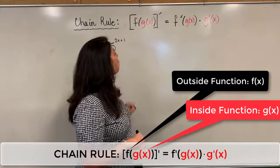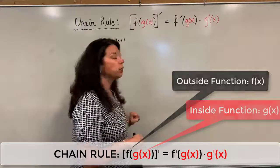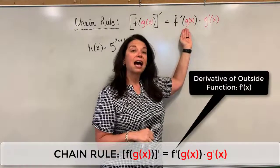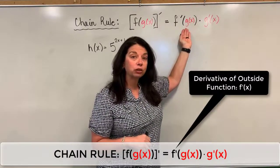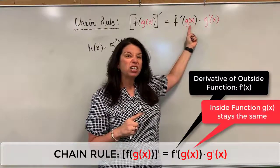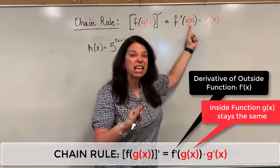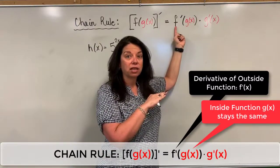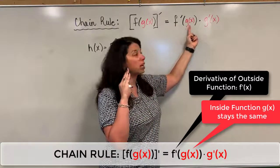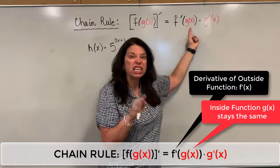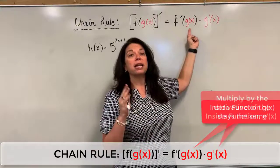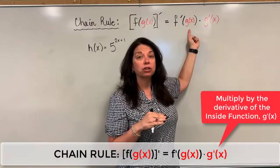I'm using two different colors here to distinguish that. The rule is: once I need to take the derivative of a composition, I am going to take the derivative first of the outside function. Here's the trick — we have to keep the inside function the same for that derivative of the outside function. So we're going to find the derivative of the outside function, but keep the inside function intact. No changes.